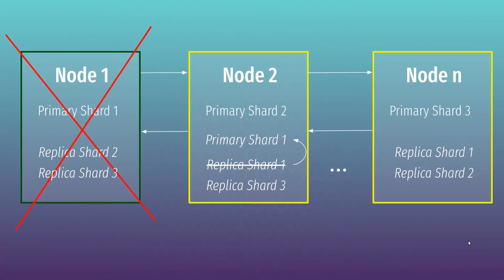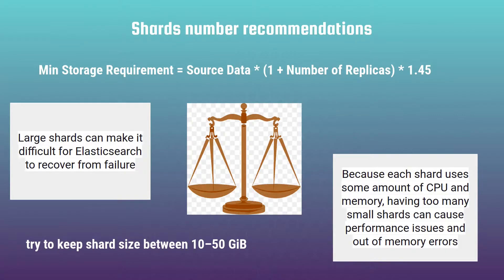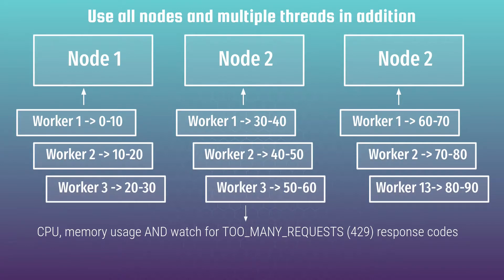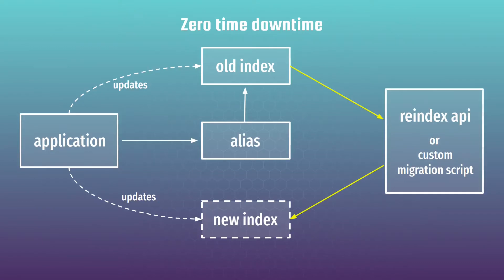The fifth and final part is about Elasticsearch for production. Here I will show you how to set up a highly available cluster, how to calculate shard size and storage requirements, how to index millions of documents in the most efficient way, and even how to achieve zero downtime re-indexing.